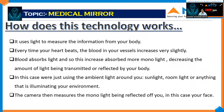How does this technology work? It uses light to measure information from our body. Every time your heart beats, the blood vessels increase very slightly. Blood absorbs light, so it absorbs more light, decreasing the amount of light being transmitted or reflected by your body. In this case, we are using ambient light — sunlight, room light, anything that is illuminating you in your environment. The camera measures the light being reflected off you — in this case, only your face.